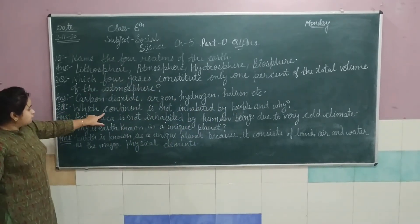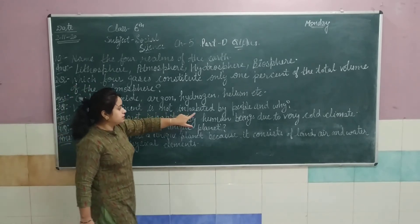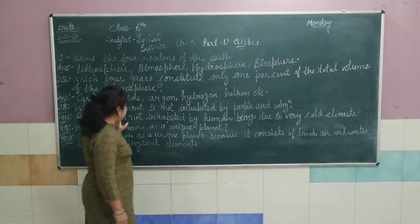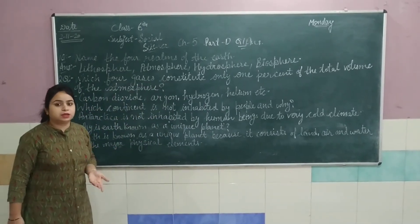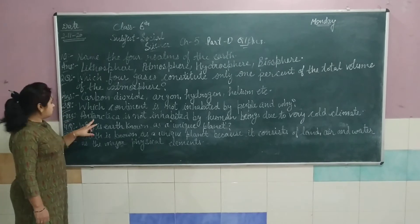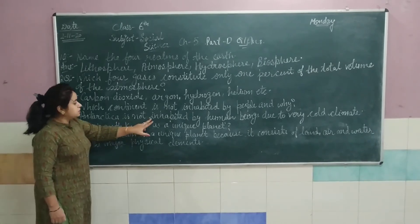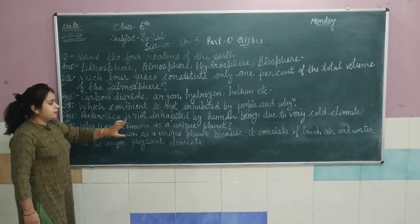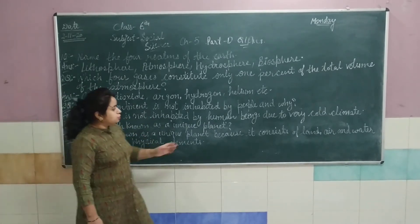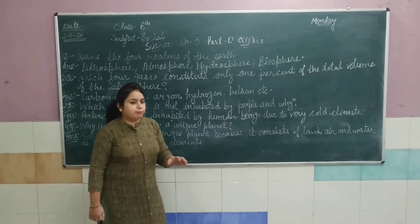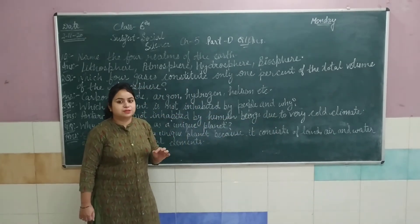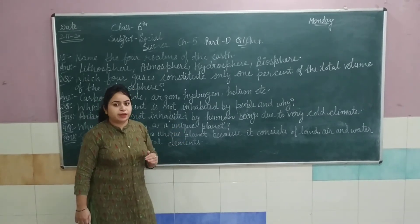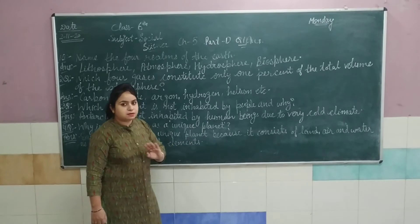Third question: which continent is not inhabited by people and why? Koon sa continent hai jahaan log nahi rahate aur kyon nahi rahate? Answer: Antarctica is not inhabited by human beings. Due to very cold climate — vahaan bohot moti ice sheets hoti hain, baraf ki parat hoti hai, isliye bohot zyada area thanda hota hai, to human beings wahaan nahi rahate.